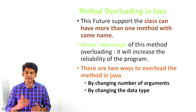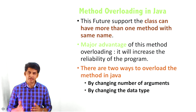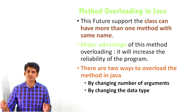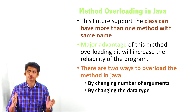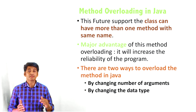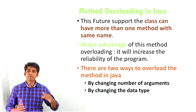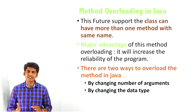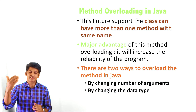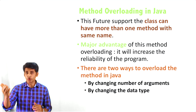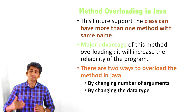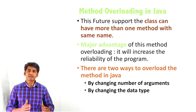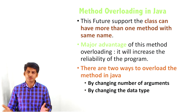What are the ways you can implement method overloading in Java? One is you can change the number of arguments — for example, you can have three arguments or you can have two arguments with the same method name. The second way is you can change the data type: in one method you can pass integer arguments, and in the second method you can pass string arguments. This is how you can implement method overloading in Java.